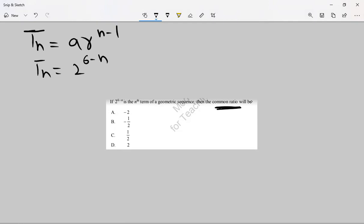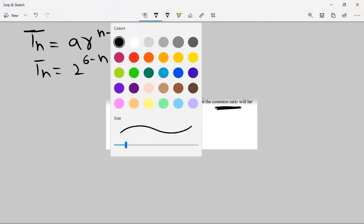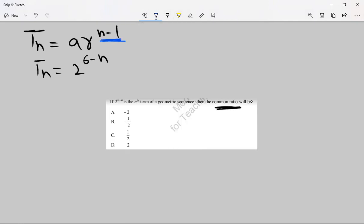If you will see it very critically, this should be noticed. N-1 is in the formula and here it is 6-N. If I will take minus sign common, it will become N-6. Now I need to make N-1. What we will do in the next step, we will make 2^(-1), N-1, and minus 5.